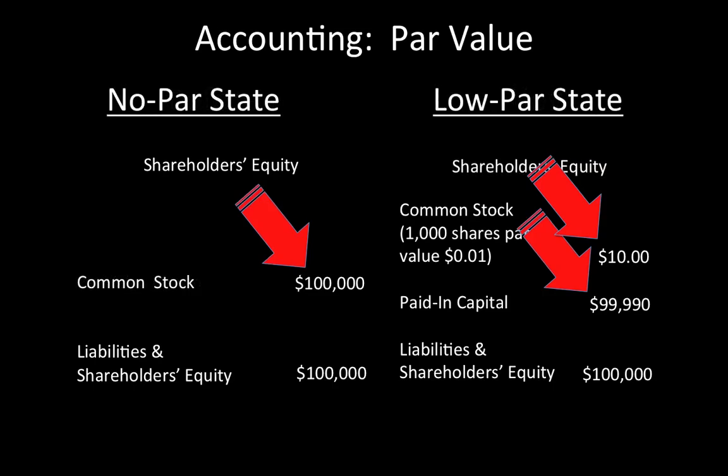Some states allowed no-par stock to be issued, in which case the balance sheet may show only one entry for common stock. In practice, the par value is set so low that the risk of the value of the assets contributed being less than their par value is negligible. However, if a high par value is used, the risk of liability is very real.